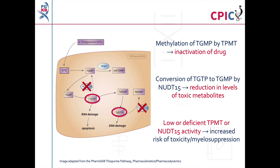If a patient has low or deficient NUDT15 activity, the levels of active thioguanine nucleotide metabolites are increased. Again, this puts the patient at an increased risk of developing myelosuppression.